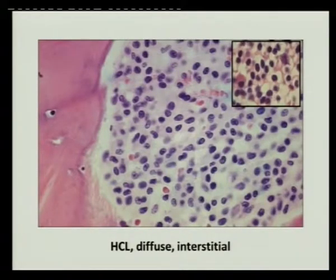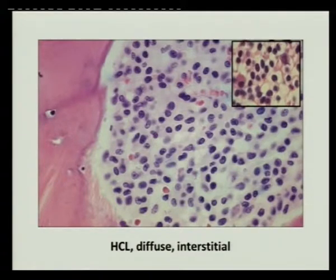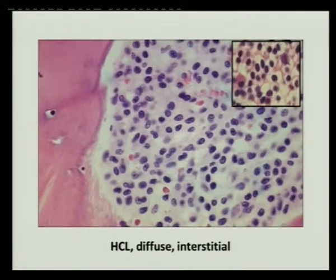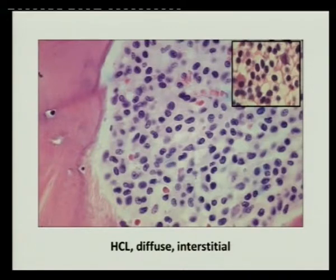Another very important part is the bone marrow infiltration pattern. Unlike CLL, which can be nodular versus diffuse, in hairy cell leukemia it must be diffuse. A nodular infiltrate in hairy cell leukemia is against the diagnosis.